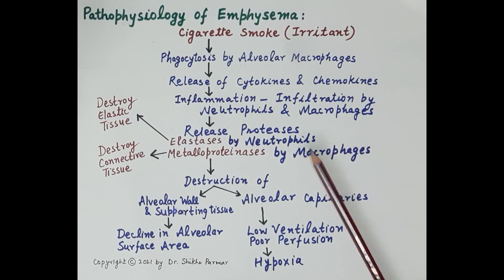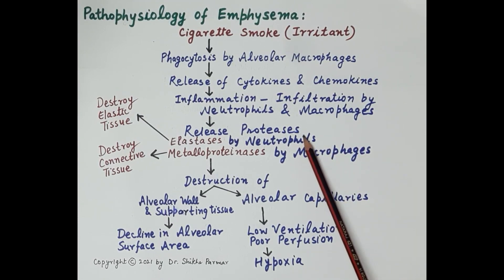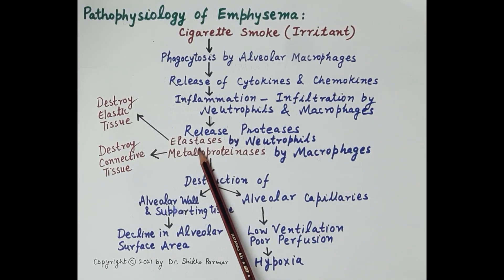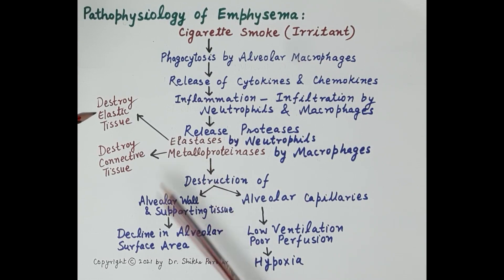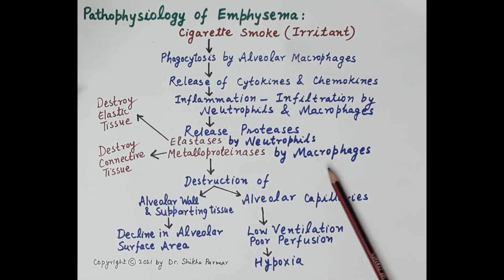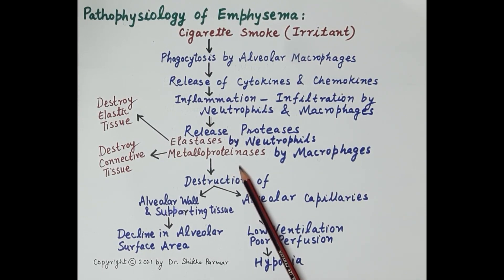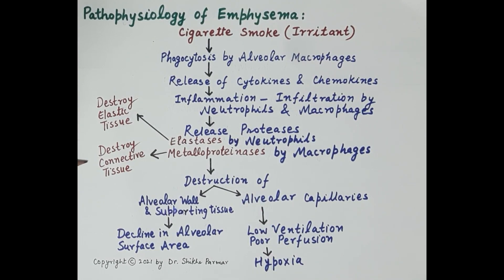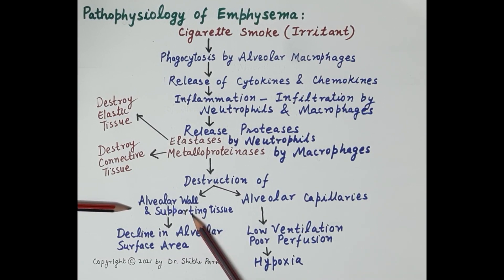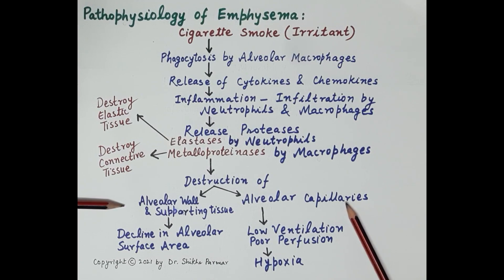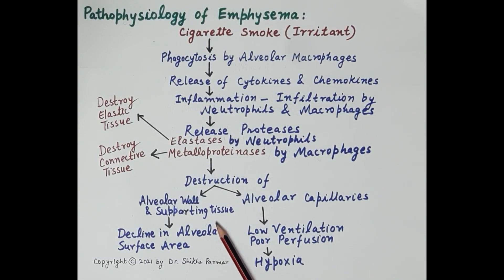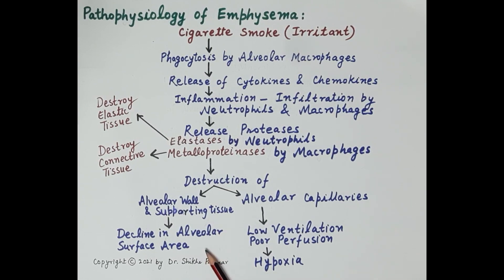These neutrophils and macrophages release proteases — enzymes that break down proteins. Neutrophils release an enzyme called elastase, which breaks down elastic tissue primarily present in the alveolar walls. Macrophages produce metalloproteinases, which destroy the connective tissue supporting the alveoli, alveolar ducts, and respiratory bronchioles. This leads to destruction of the alveolar wall and supporting tissue, as well as destruction of the alveolar capillary network, reducing the alveolar surface area available for gas exchange.